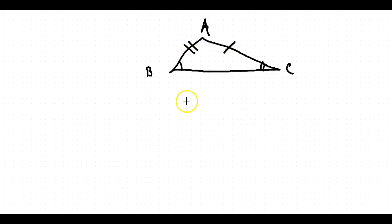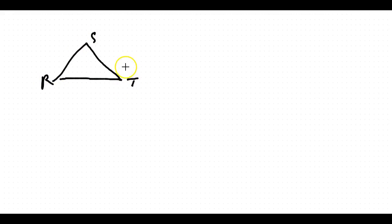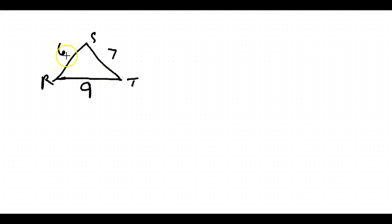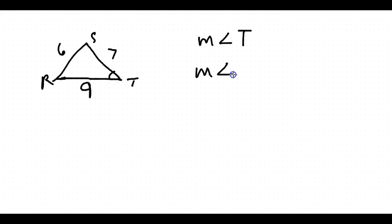The converse also holds: if one angle has a greater measure than another angle, then the opposite side of the greater angle is longer than the opposite side of the lesser angle. Looking at example triangle RST with sides 6 cm, 7 cm, and 9 cm — angle T is the smallest because 6 is the smallest side, so the opposite angle is smallest. The next smallest would be angle R, and then angle S is the biggest.